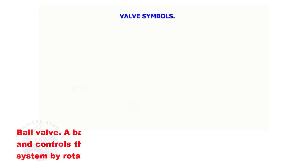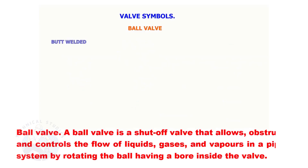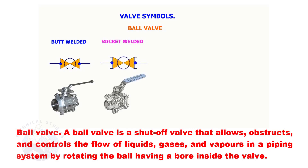Ball valve. A ball valve is a shutoff valve that allows, obstructs, and controls the flow of liquids, gases, and vapors in a piping system by rotating the ball having a bore inside the valve.